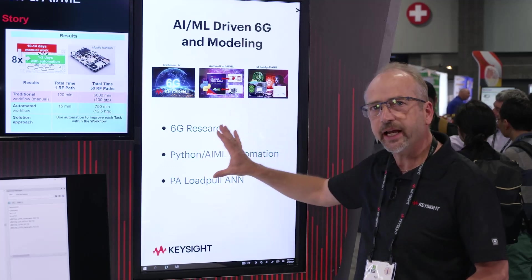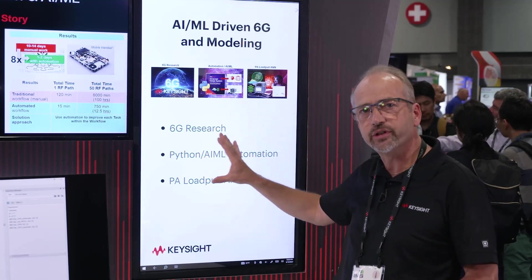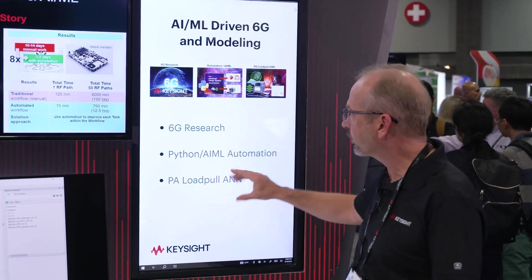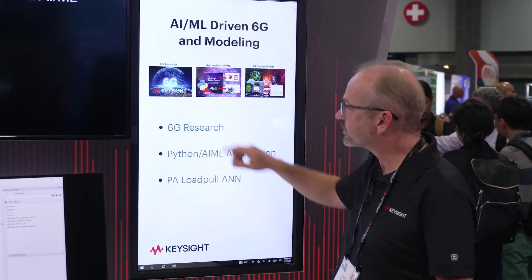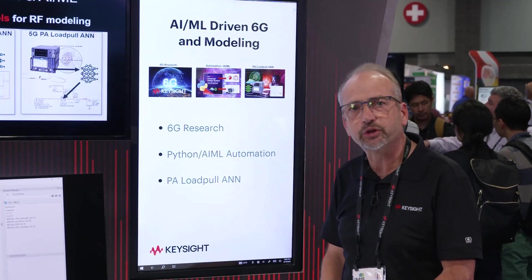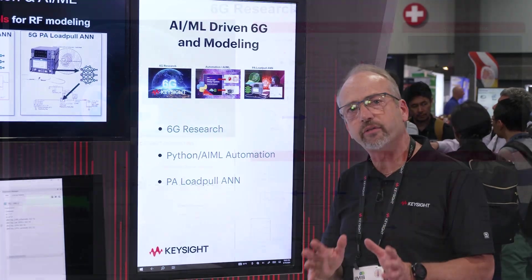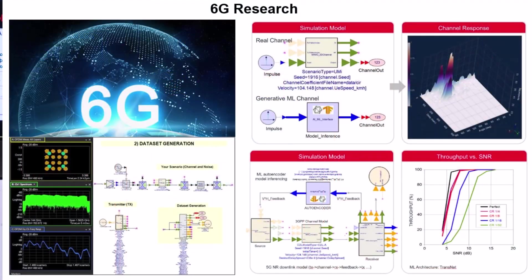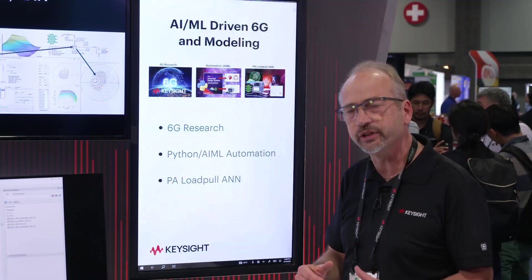There are three main areas that we're focusing on right now. First is 6G research. We're working with universities now to develop this, and we're incorporating that into our 6G analysis flow today.